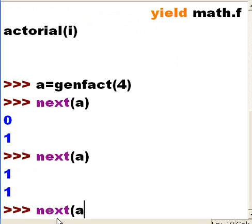Next(a). Well, the next number should be 2, and the factorial of 2 is 2 times 1, which is 2. There we go.